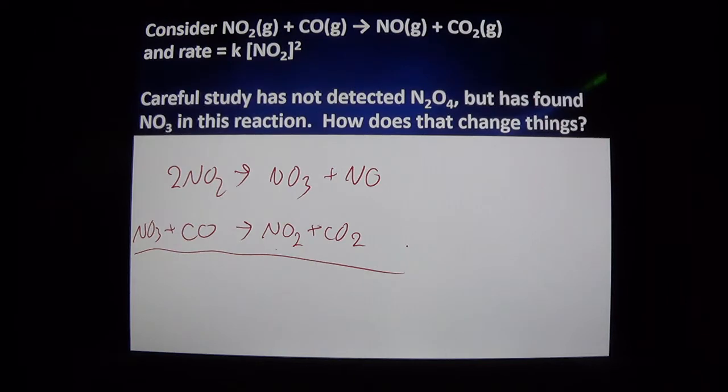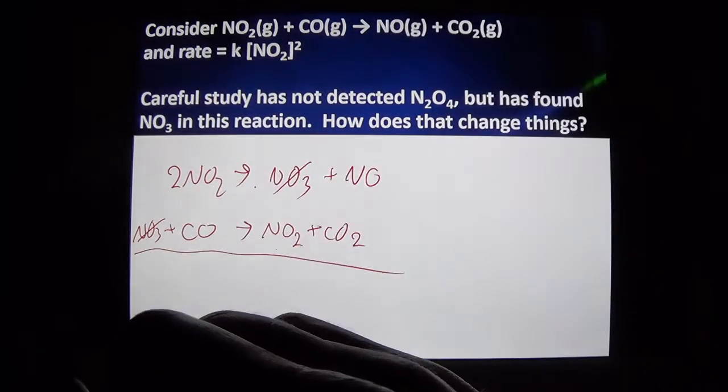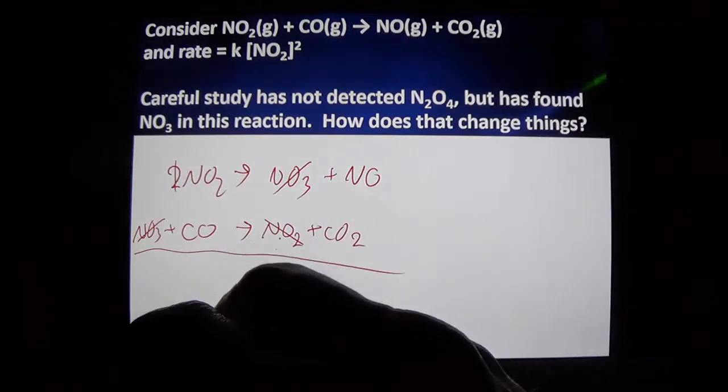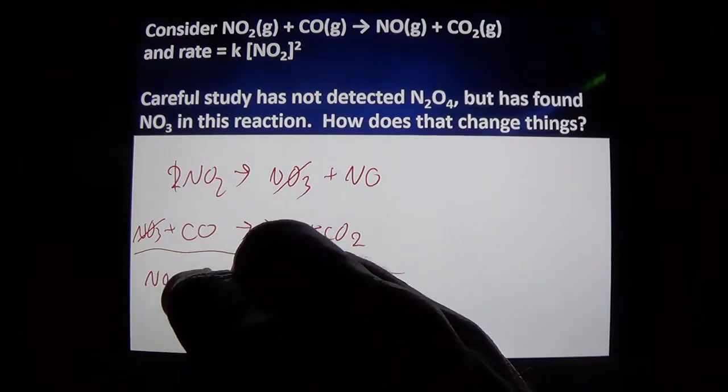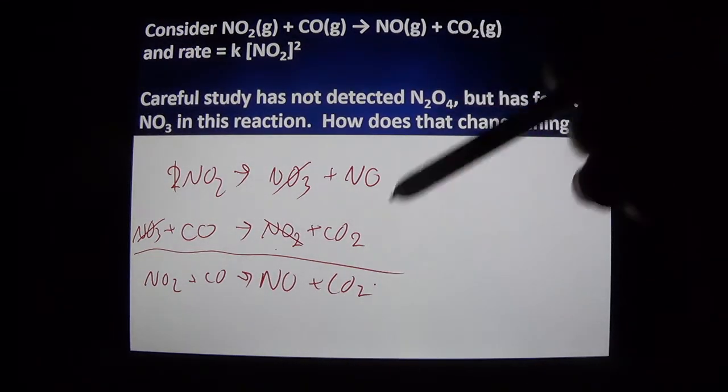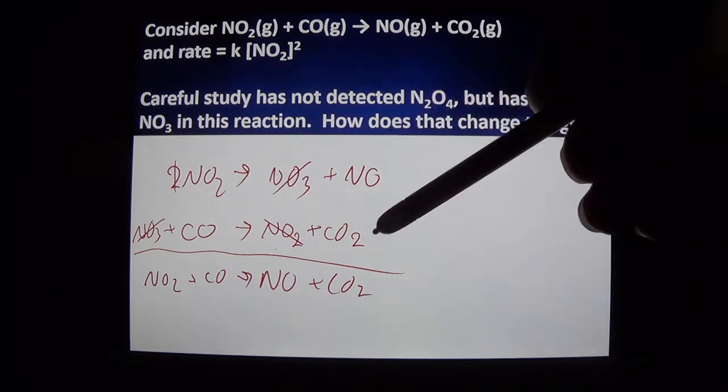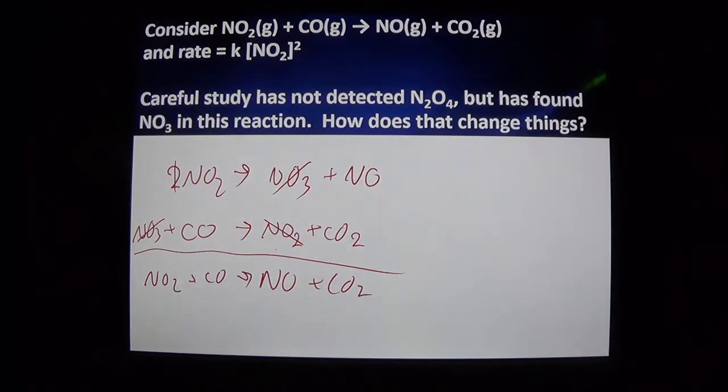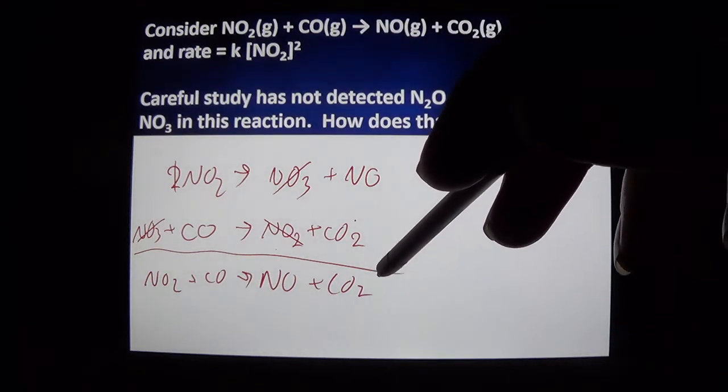Let's double check that we have worked this out. Intermediates cancel. One of those NO2s cancel. What do we have? NO2 plus CO yield NO plus CO2. Yes, we did get our overall balanced equation. So I'm probably correct if this reaction has NO3, if we discover that in lab. And if it happens in only two steps. If any of those ifs are not true, then it's back to the drawing board. It really is difficult to figure out a reaction mechanism. It is a guess and check method.